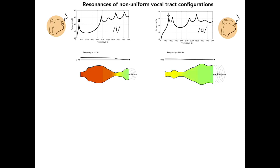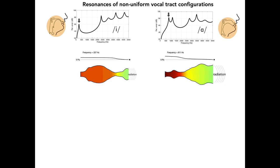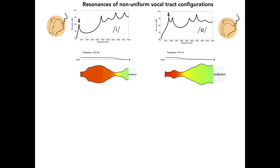The first resonance of this particular AH vowel is 811 Hz. Again, the standing wave associated with this frequency is similar to the standing wave observed for the first resonance of both the uniform tube and the E vowel. The pressure variation along the vocal tract length, however, is modified by the constrictions and expansions that form the AH configuration.